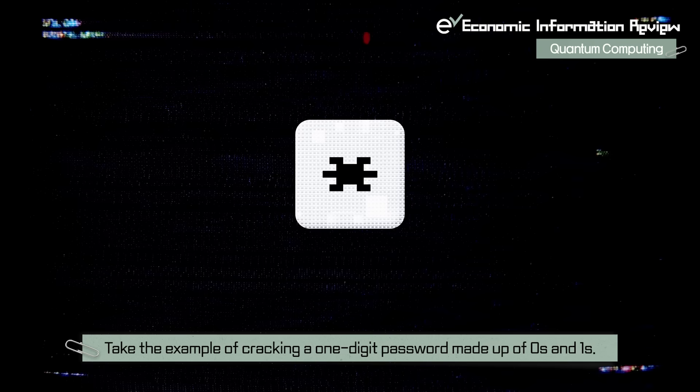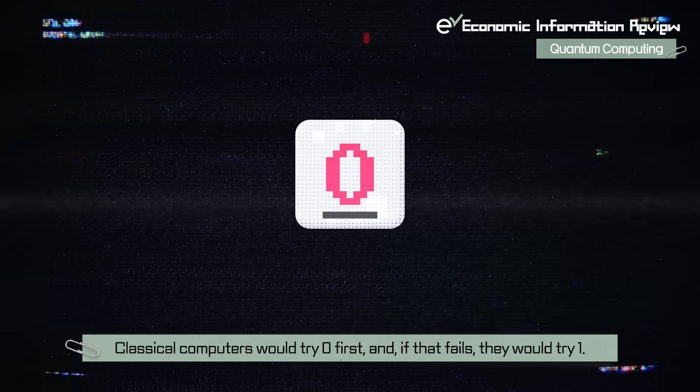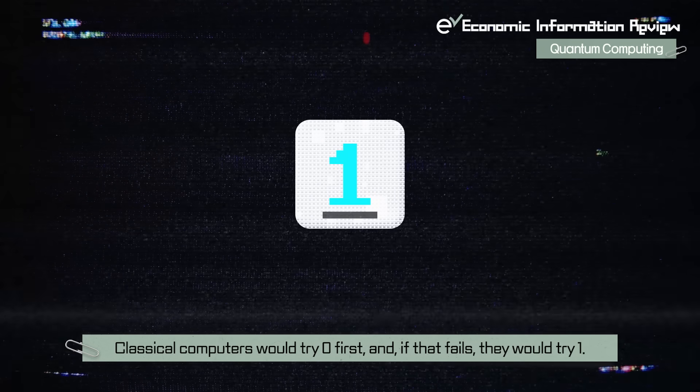Take the example of cracking a one-digit password made up of 0s and 1s. Classical computers would try 0 first, and if that fails, they would try 1.